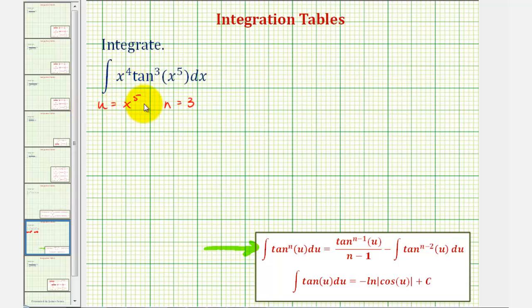By performing this u-substitution, du equals 5x^4 dx. This is good news because we have the extra factor of x^4. If we divide both sides by 5, one-fifth du equals x^4 dx.